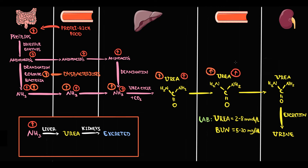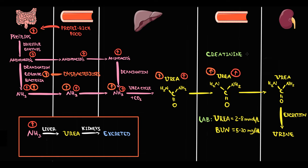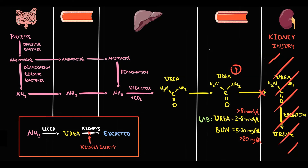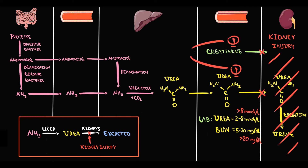To determine whether elevated urea is caused by kidney dysfunction or increased ammonia production, we measure urea in combination with creatinine. Creatinine is also excreted by the kidneys. If kidneys are working fine, excretion of both urea and creatinine will be normal — in that case, elevated urea reflects high ammonia production. But in kidney dysfunction, kidneys cannot excrete either urea or creatinine, so the levels of both urea and creatinine in the blood increase.